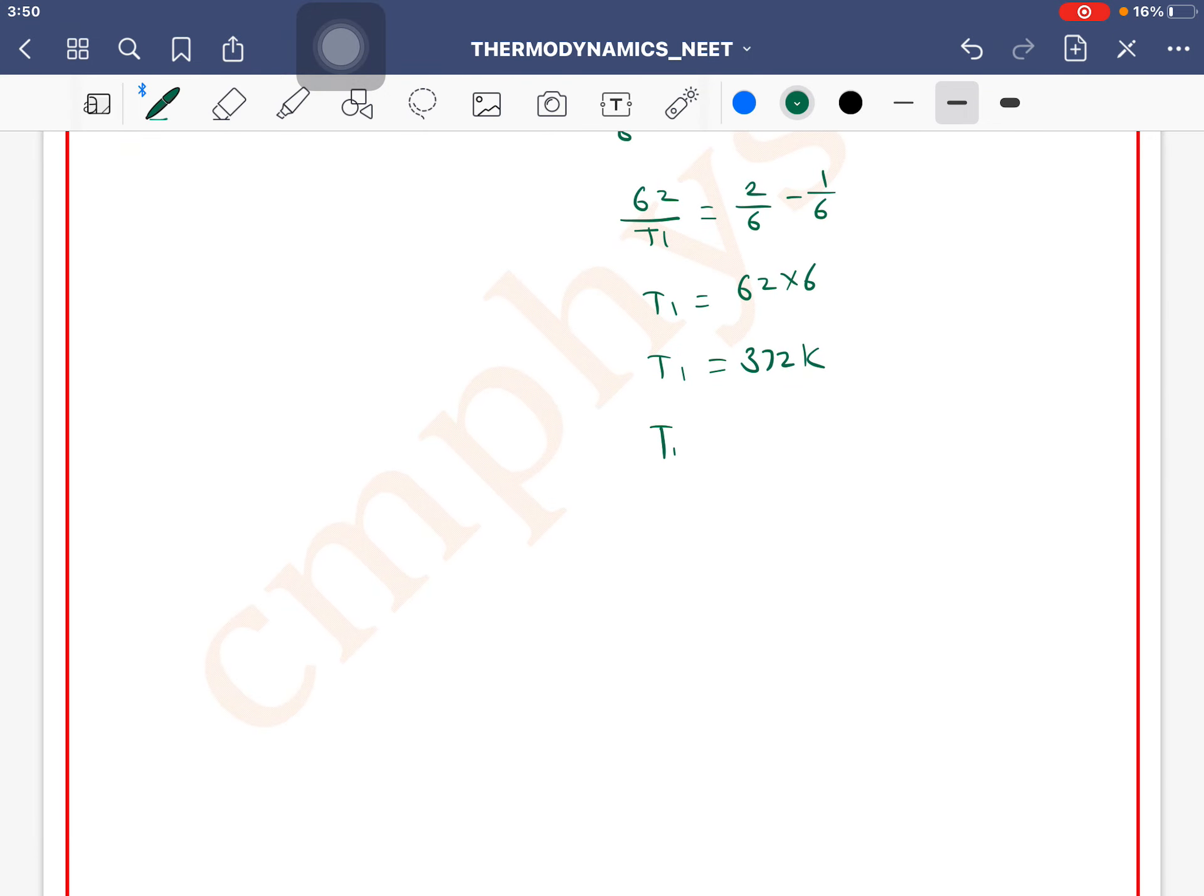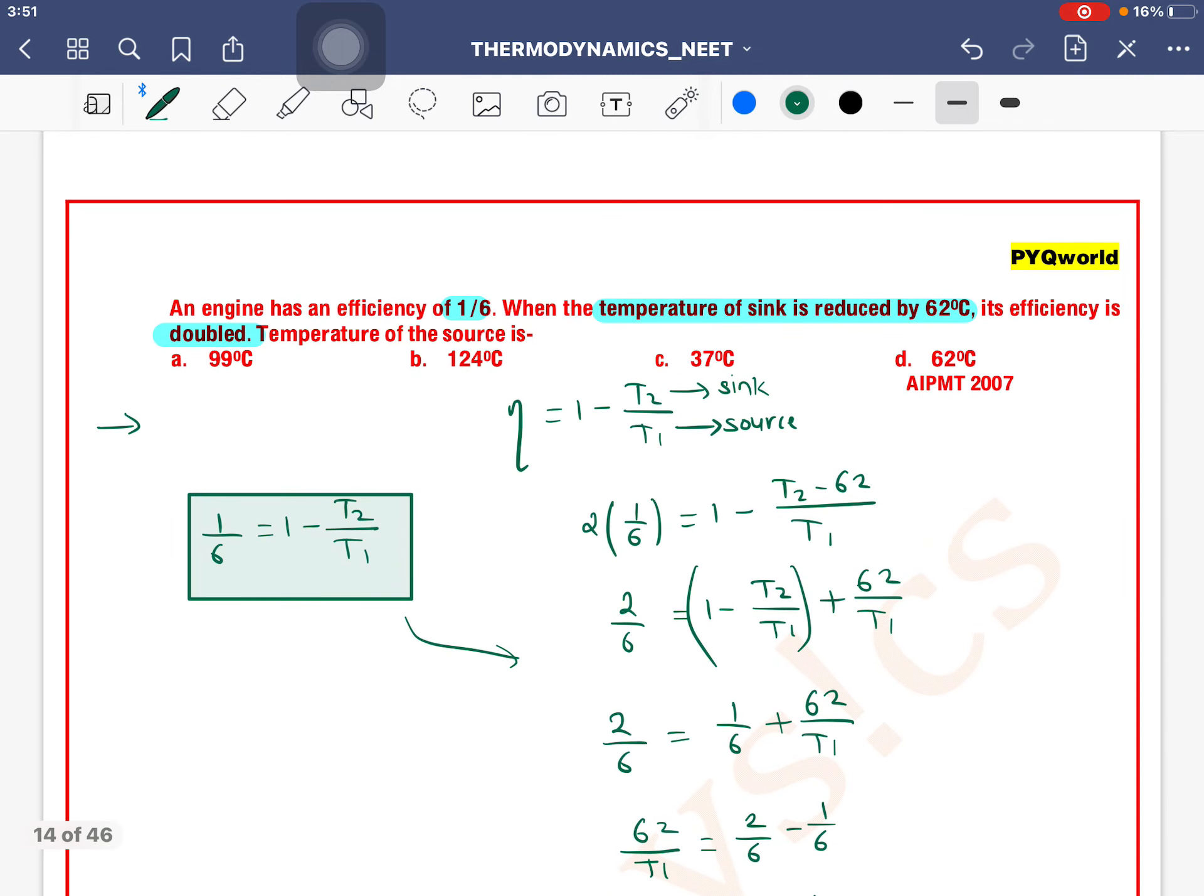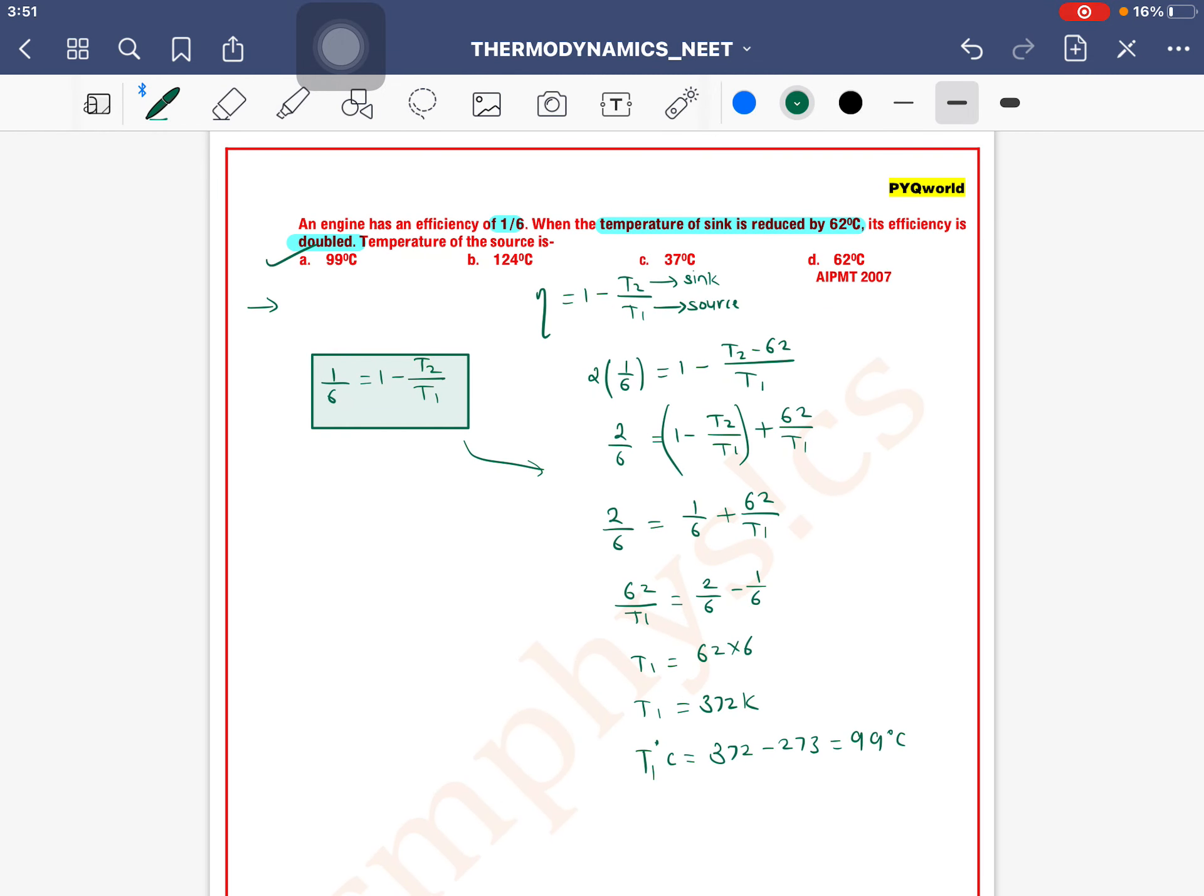The options are in degree Celsius, so converting: 372 - 273 = 99 degree Celsius. So 99 degree Celsius means option A is the correct one.